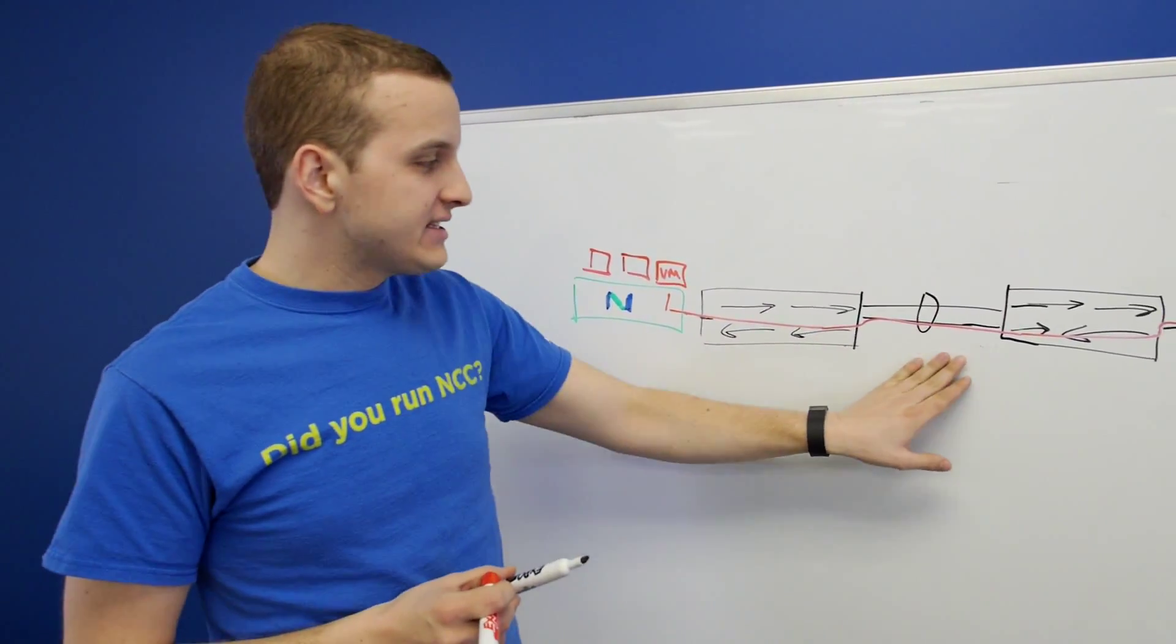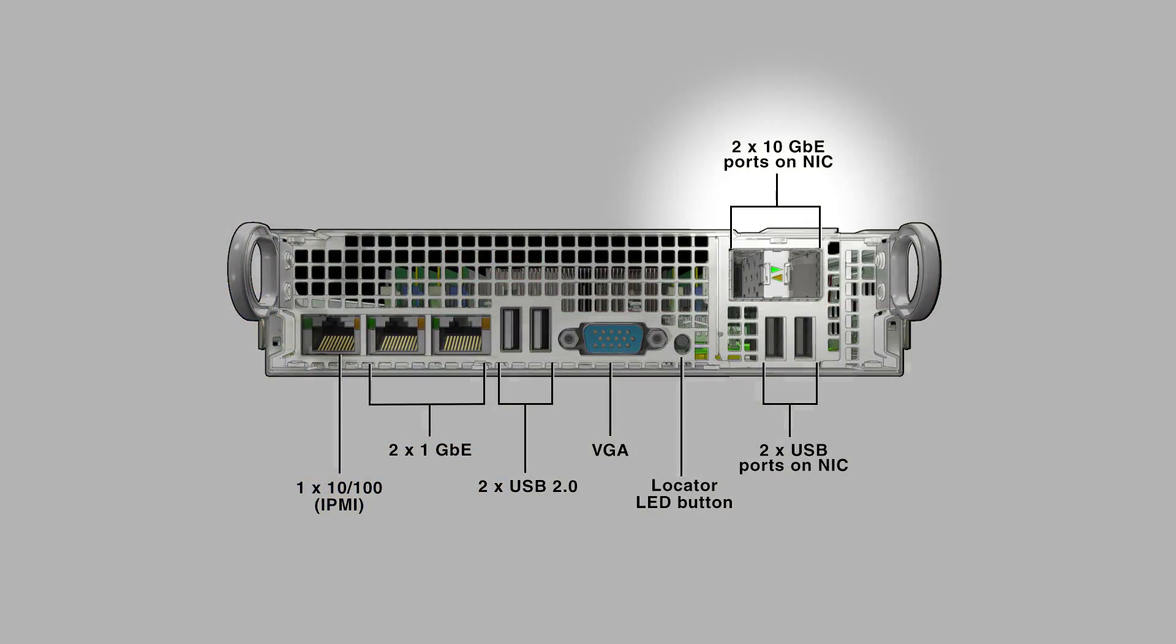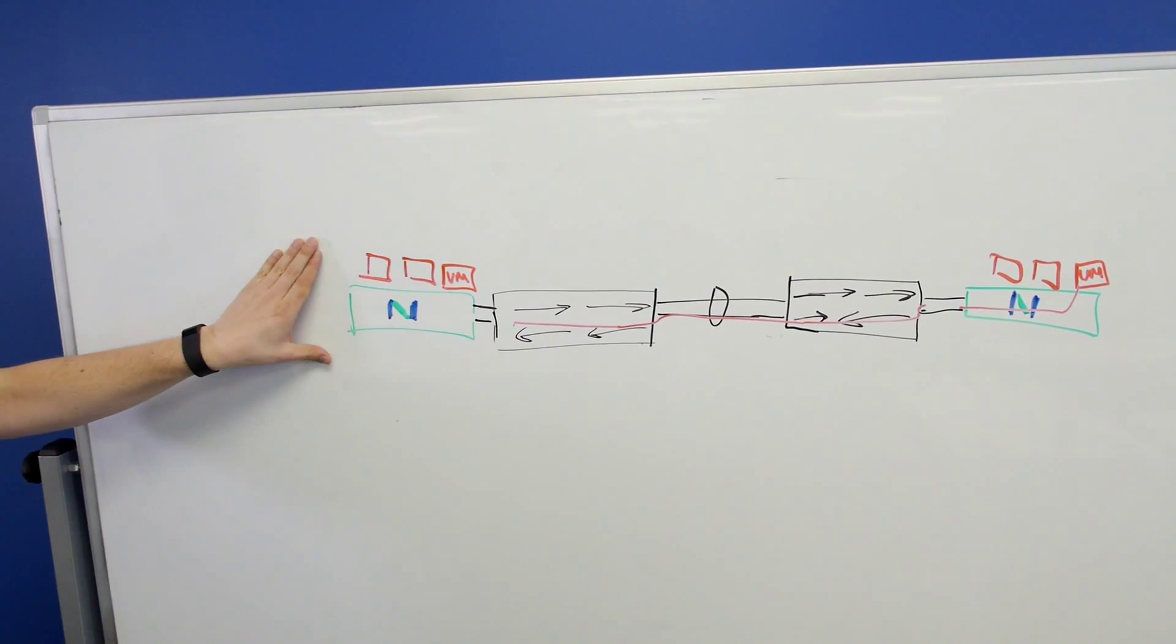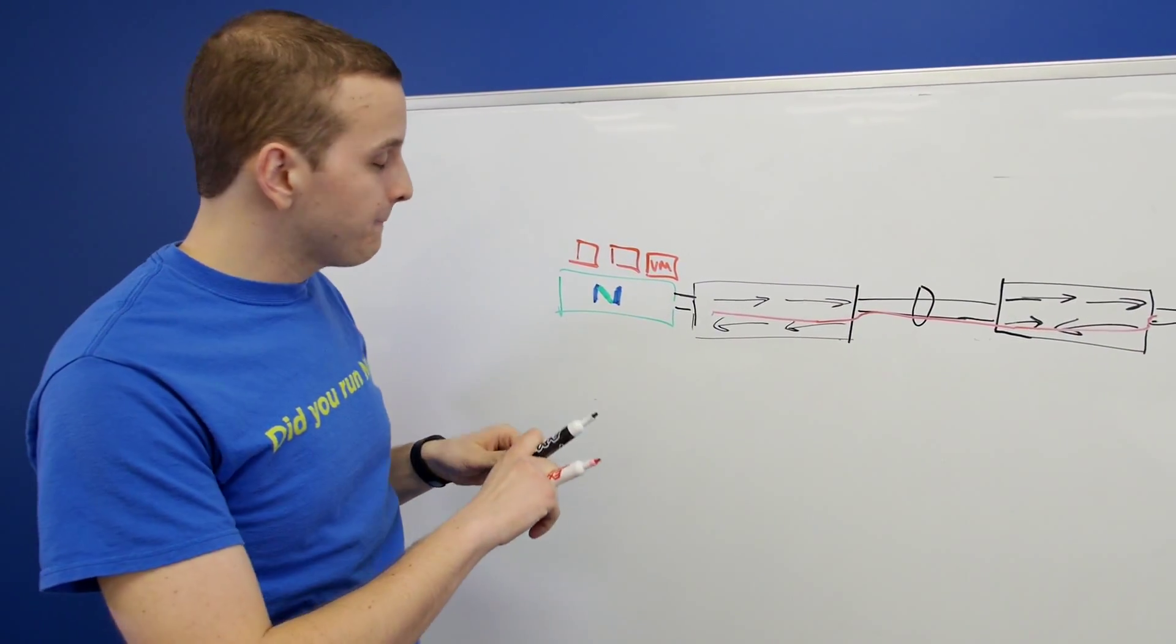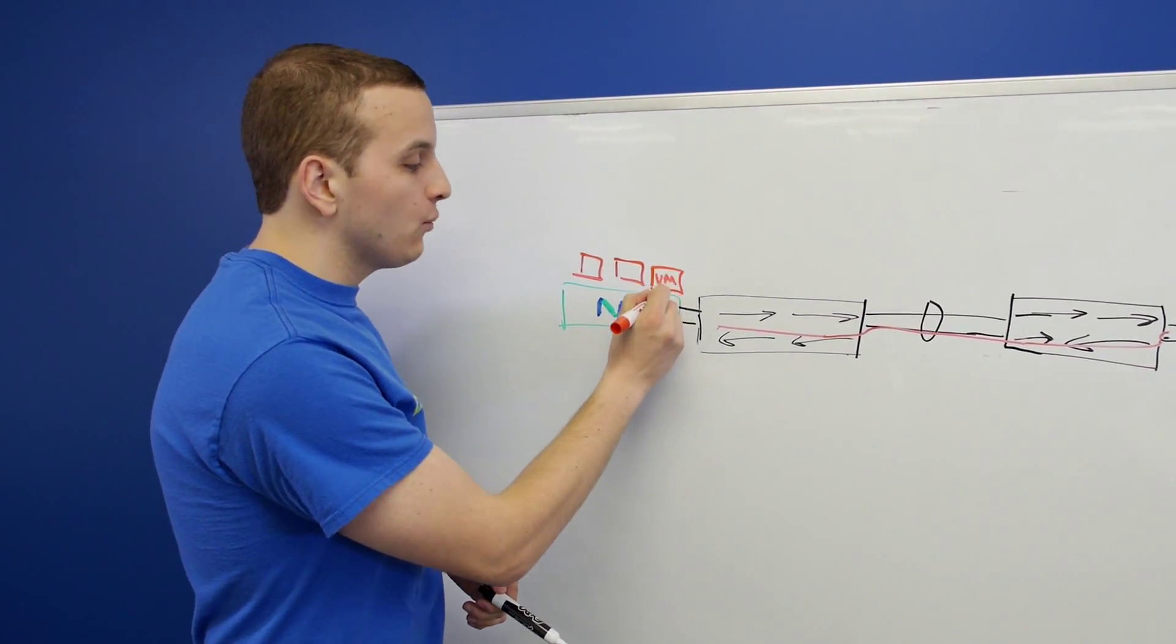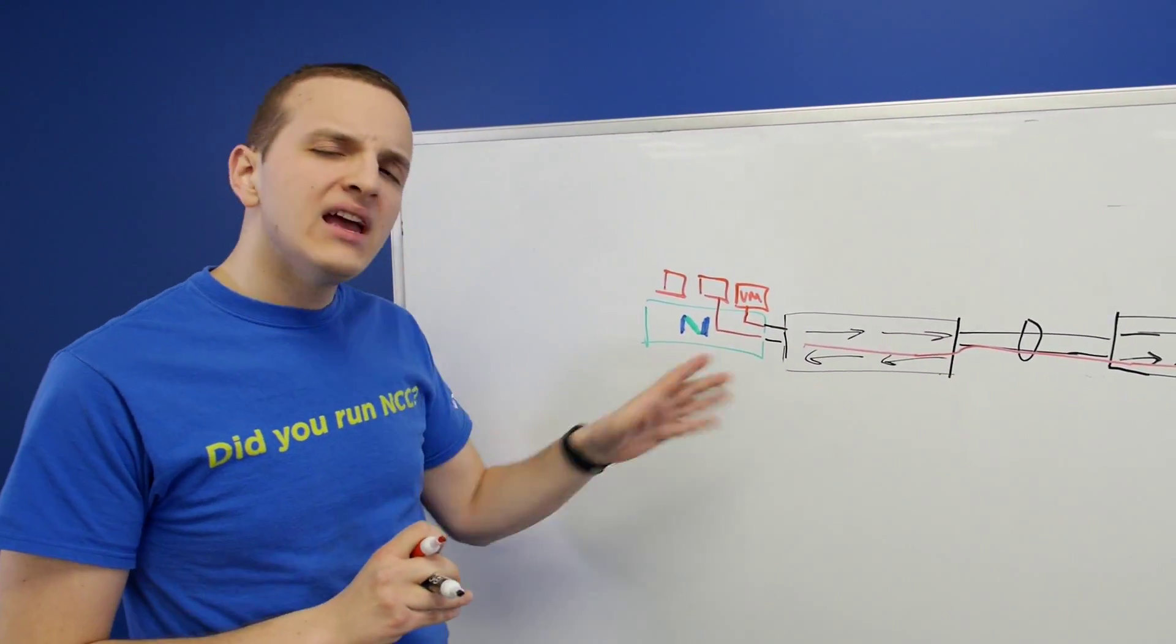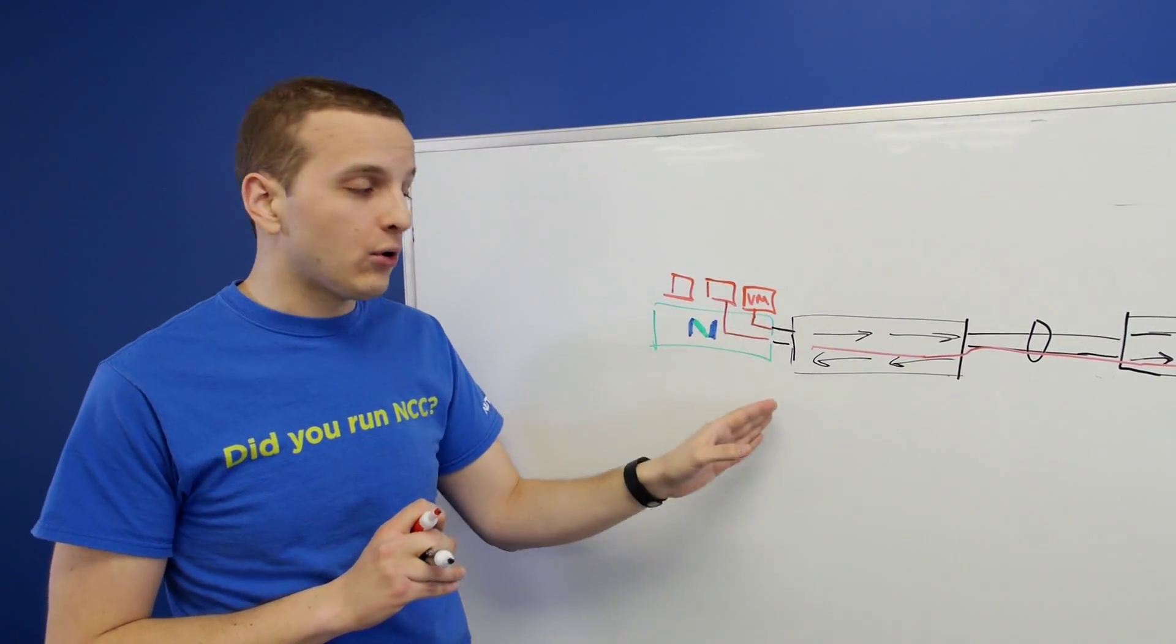Just like you can have multiple links between your switches, each Nutanix node has two 10 gig interfaces, and you can connect both of those. Now, by default, ESX does route based on originating port ID, which means that each VM will get pinned to a single uplink and always use that uplink. In this case, you don't need to configure anything special on the switch because it doesn't see the MAC address moving between the ports.